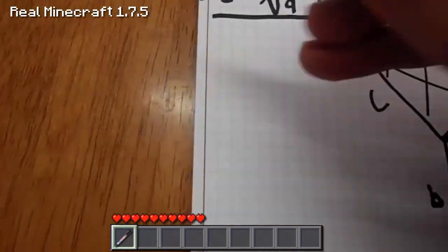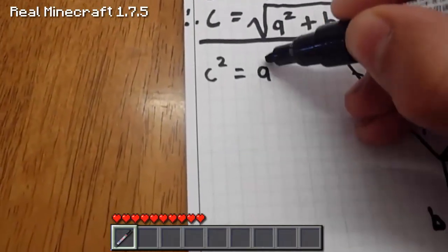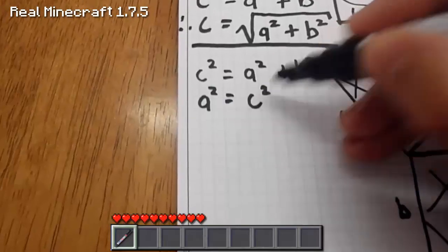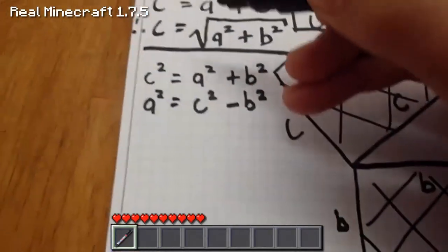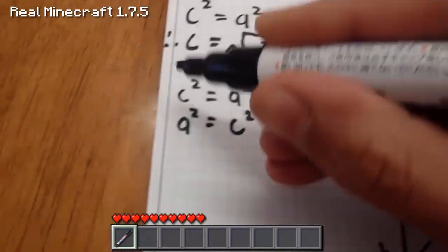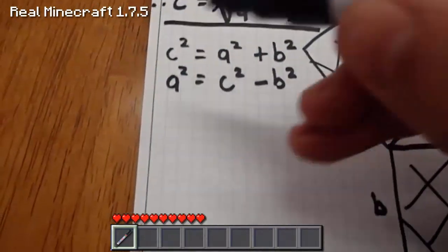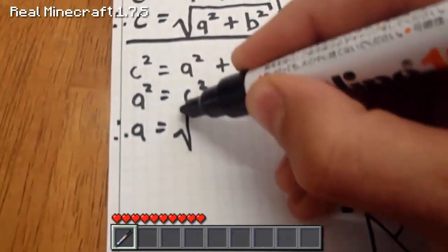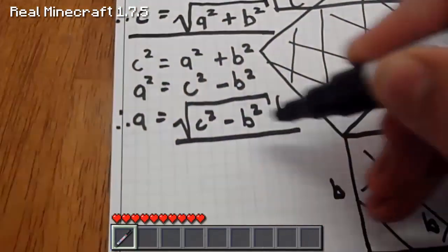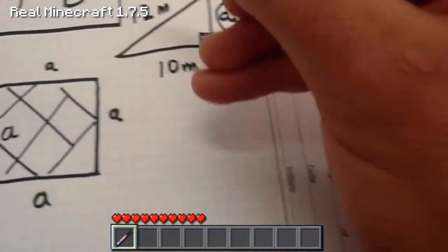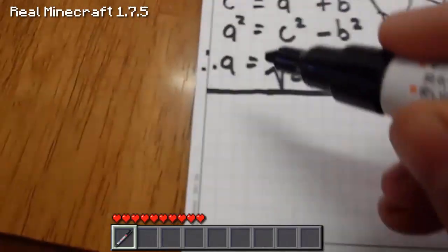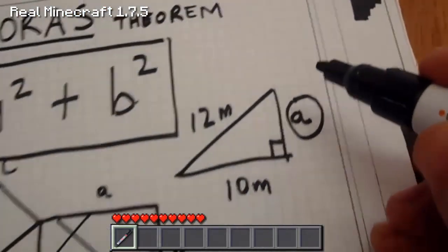Now let's work out the formula for A. C squared equals A squared plus B squared. Therefore A squared equals C squared minus B squared - all I did was take B over to the other side, and because it's plus B, I have to minus it on the other side. Therefore A equals the square root of C squared minus B squared. So if I put 12 in for C and 10 in for B, I could theoretically work out what A is in this right-angled triangle.